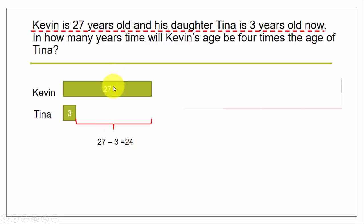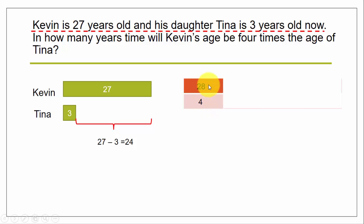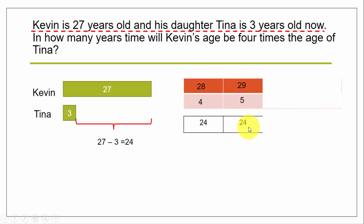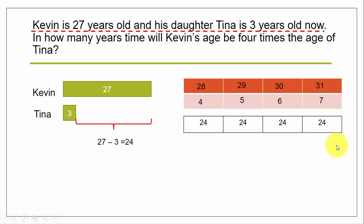This is the difference in age between Kevin and Tina. Now, as each year passes, Kevin ages by one year and Tina also ages by one year. For example, Kevin becomes 29 and Tina becomes 5 — the difference still remains 24. The next year Kevin is 30, Tina is 6 — still 24. The difference in age between two people always remains the same as years go by, because each of them increases in age by one.